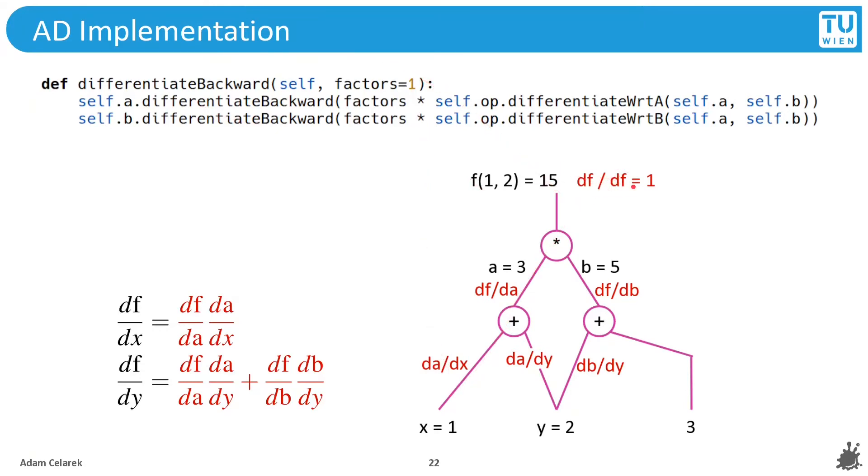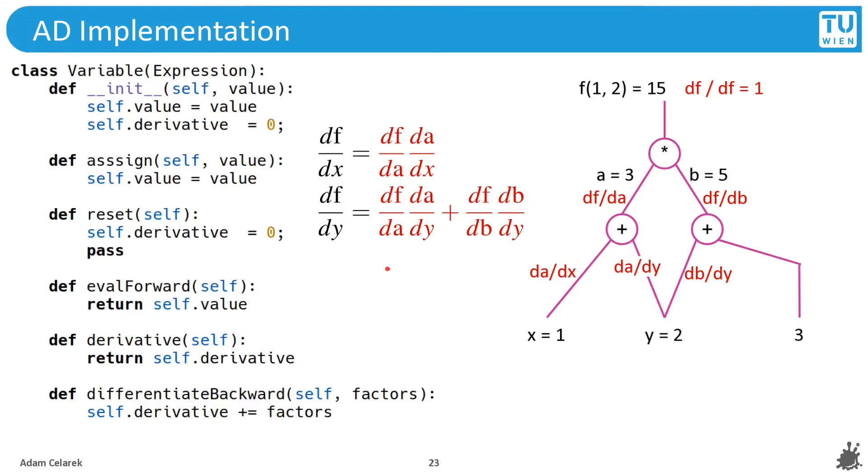Let's look now at differentiate backward, which goes from top to bottom, again recursively. We start with the df/df which is the factor of one. Then we descend into the left and into the right node. We multiply the factor, which is the chain rule, times the derivative with respect to a, because this is descending into the a node. This will recurse from top to bottom. Along the way, it applies the chain rule, which you can see here.